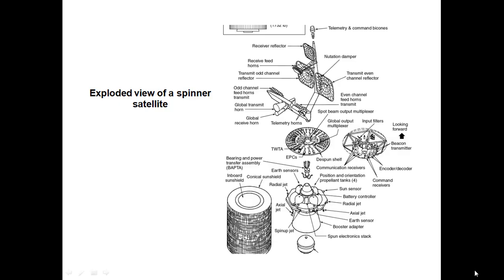This is an exploded view of a spinner satellite — showing all components that are kept inside the drum. These include telemetry and command beacons, receiver reflectors, nutation dampers, transmit channel reflectors, global transmit and horn antennas, travelling wave tube amplifiers, earth sensors and sun sensors. These earth and sun sensors relay data about the satellite's position to Earth, and in correspondence with that data, stabilization and correct attitude are maintained. Other components include spun electronic stacks, axial jets, radial jets, and command receivers — all of which are housed inside the drum.